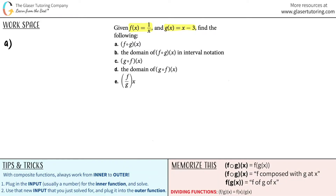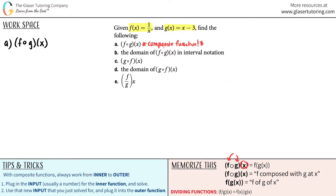The first thing they want is to find f composed with g at x. This is a composite function. There are two notations for composite functions — you should know both. I prefer the f of g of x notation. The first function named is the outer function, and the second is the inner function, so f composed with g at x is the same as f of g of x.